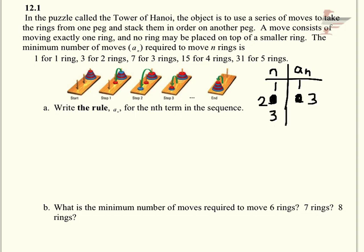For 3 rings, it takes 7 moves. For 4 rings, it takes 15 moves. And for 5 rings, it takes 31.